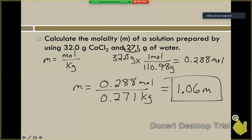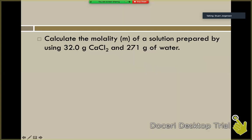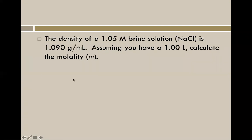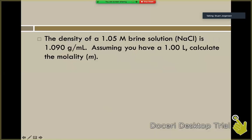Cool. Another example for you, as we look at our sample problems here. This one is going to be a little more involved in terms of calculations and what needs to happen. So the density, we're told the density and the molarity. We've got a 1.05 molar brine solution, which is a sodium chloride solution.